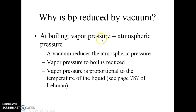Why is boiling point reduced by a vacuum? At boiling, the vapor pressure equals atmospheric pressure. Water boils at 100 degrees Celsius because its vapor pressure at that temperature is 760 millimeters of mercury. If I lower the pressure to 300 millimeters of mercury, water doesn't need to produce as much vapor pressure to match the atmosphere, so the temperature required is much lower — perhaps 60 or 70 degrees. Through reduction of atmospheric pressure, the vapor pressure requirement is reduced, the boiling temperature is reduced, and you distill at a lower temperature.